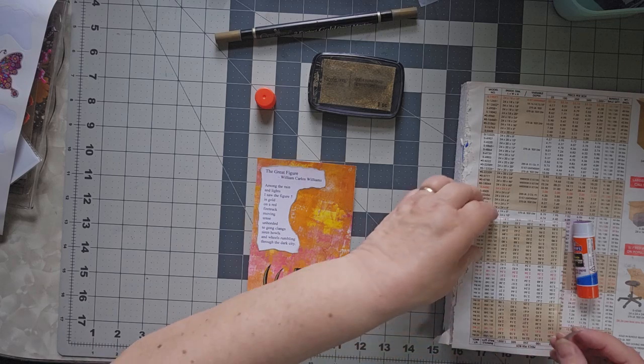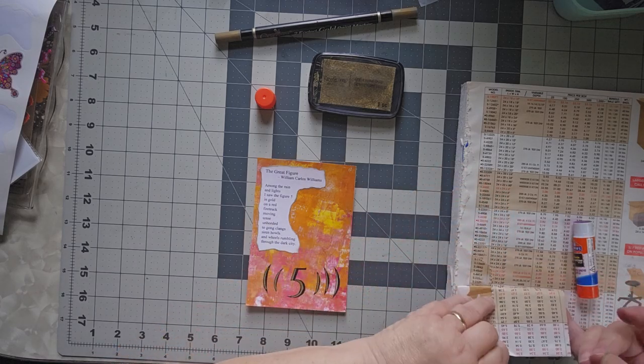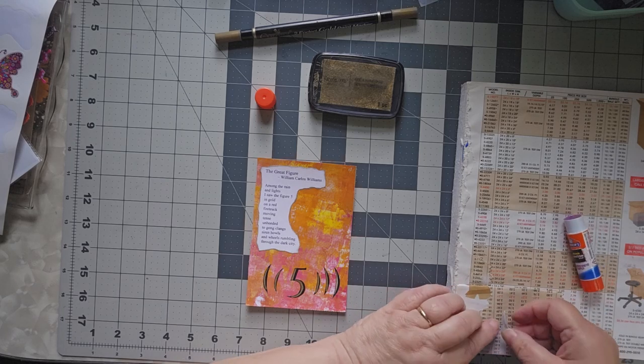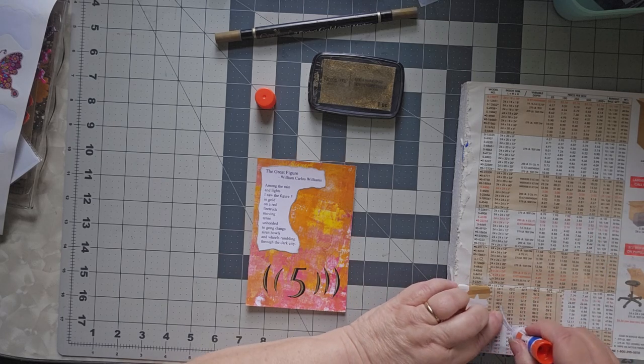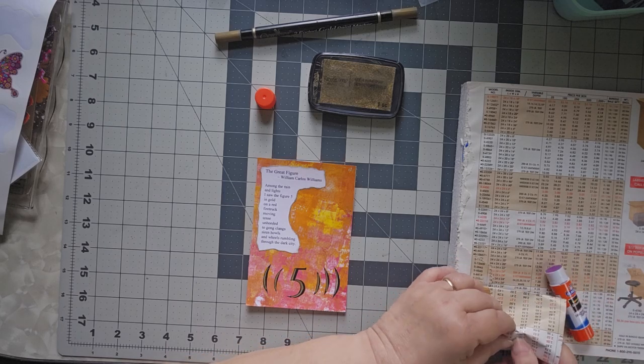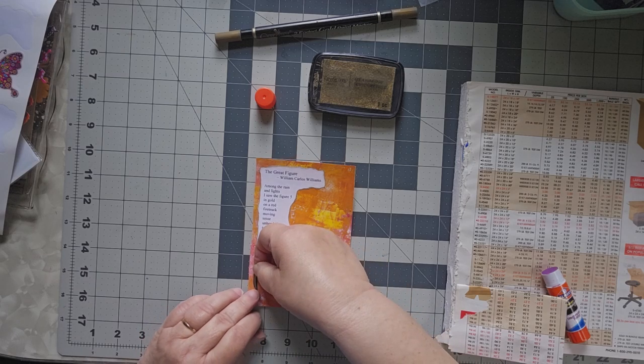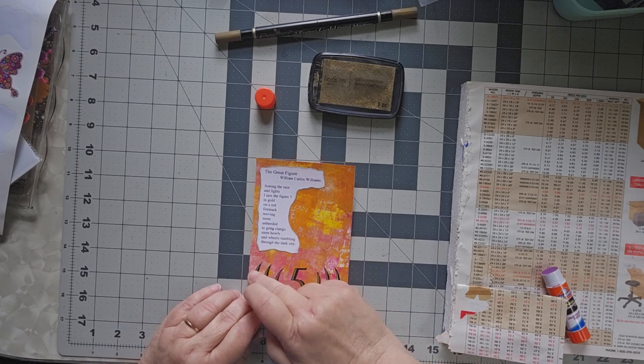So this is July 5th. This is the Jelly Postcard Play. And I am doing Day 5, July 5th. I saw the figure 5 in gold.